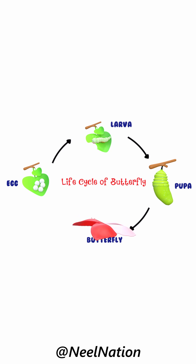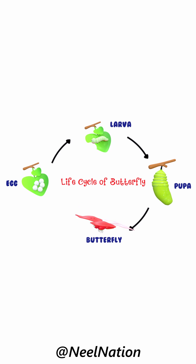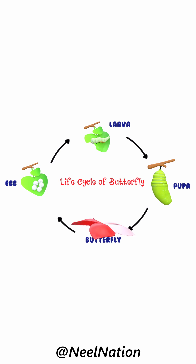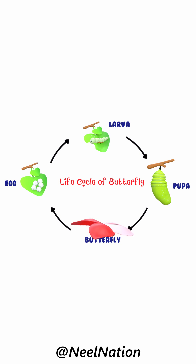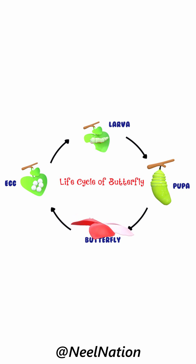So the last stage is the adult butterfly. Another female lays eggs and starts the life cycle all over again.